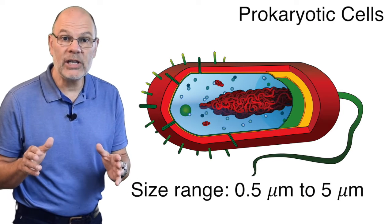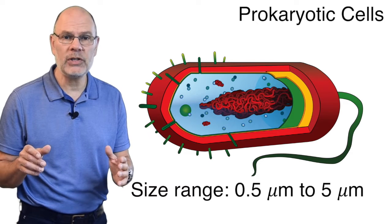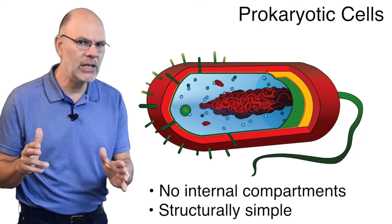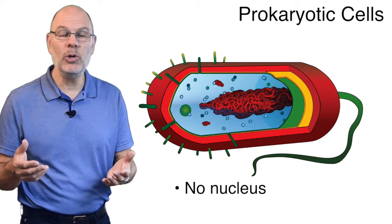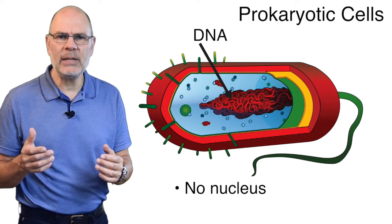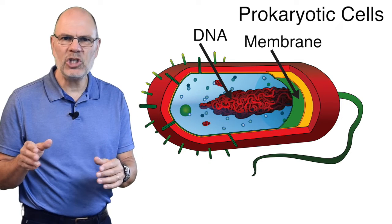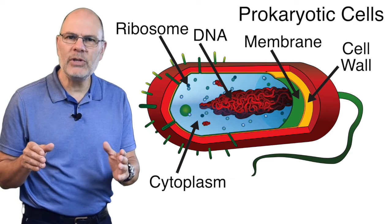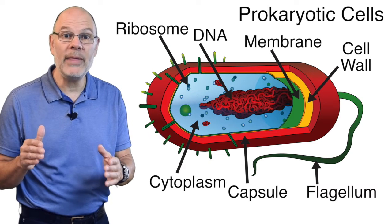Prokaryotic cells are, with some exceptions, the smallest cells in nature, ranging in size from half a micrometer to five micrometers. Prokaryotic cells lack internal compartments, making them much simpler in structure than eukaryotic cells. One of the most important compartments that they lack is a nucleus. You can see that their DNA, which is represented here as this jumbled mass, is within the cytoplasm. Prokaryotic cells have a membrane, RNA, ribosomes, cytoplasm, usually a cell wall, and sometimes other structures like a protective outer capsule or a spinning tail called a flagellum that lets them move.